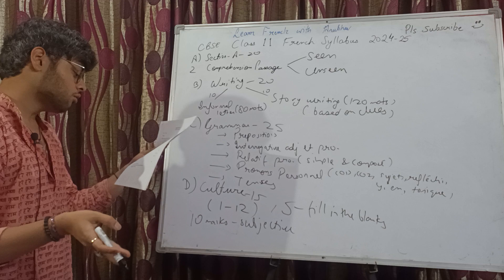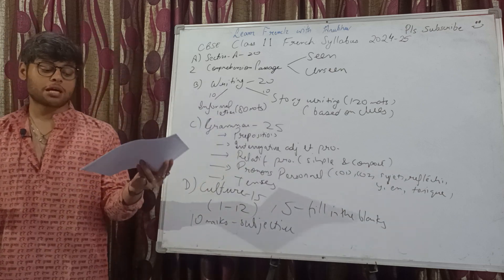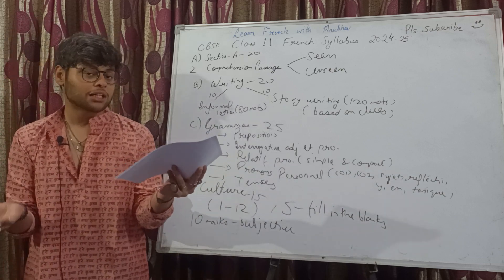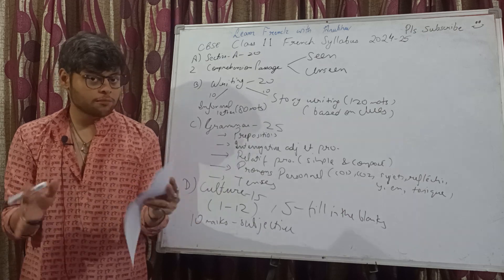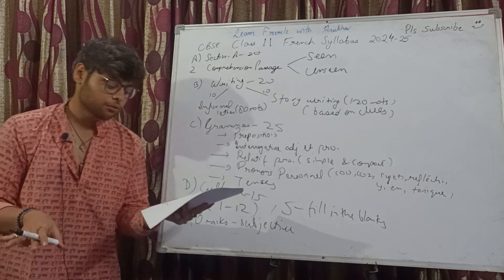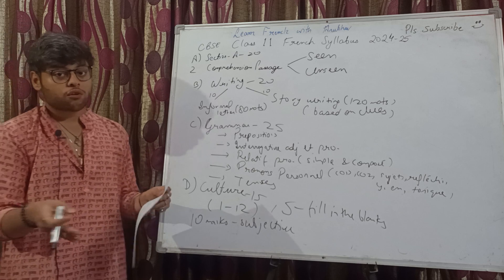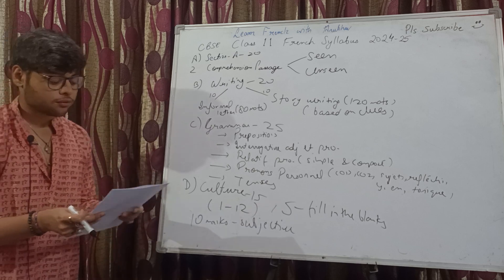The remaining 20 marks: 10 marks for your ASL. This time you will have 5 marks for listening and 5 marks for speaking. These activities will be conducted in your school only. And then you have a project work — a project of 10 marks.